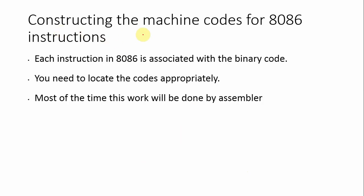The next step is constructing the machine code for 8086 instructions. Each instruction in the 8086 is associated with a binary code. In the 8086, we use binary code, which has only two values: binary 1 and binary 0. You need to locate the codes appropriately.